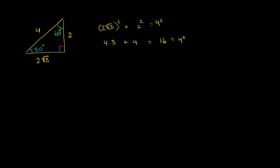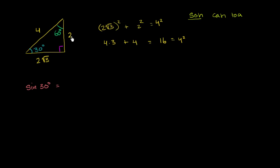What is the sine of 30 degrees? This angle right over here is 30 degrees, so we can use this right triangle. From SOHCAHTOA, sine is opposite over hypotenuse. The sine of 30 degrees — the opposite side is 2, and the hypotenuse is 4. So it is 2 over 4, which is 1 half. Sine of 30 degrees is always going to be equal to 1 half.